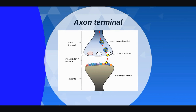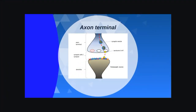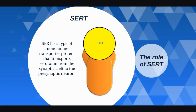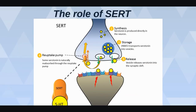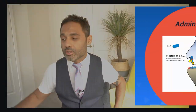When we look at the axon terminal, there is a pre-synaptic neuron, a post-synaptic neuron, and a synaptic cleft. From the pre-synaptic neuron, the neurotransmitter moves through and gets released into the synaptic cleft to act on the post-synaptic neuron. The next important thing is the role of SERT — the serotonin transporter. SERT is a monoamine transporter protein that transports serotonin from the synaptic cleft back to the pre-synaptic neuron. Serotonin is produced in the neuron; VMAT2, the Vesicular Monoamine Transporter 2, transports serotonin into vesicles, which then release serotonin into the synaptic cleft. SERT reabsorbs some serotonin through this reuptake pump, sucking it back into the pre-synaptic neuron.